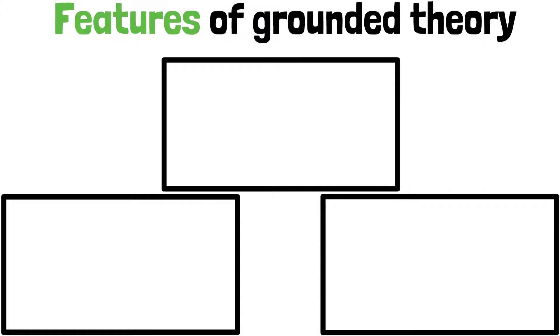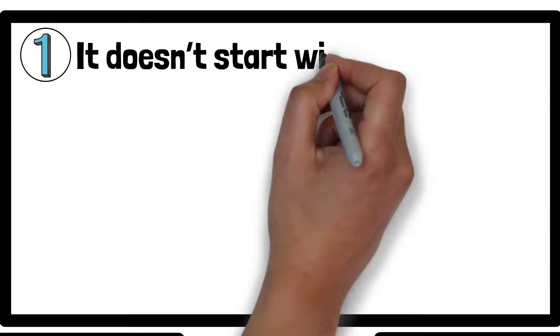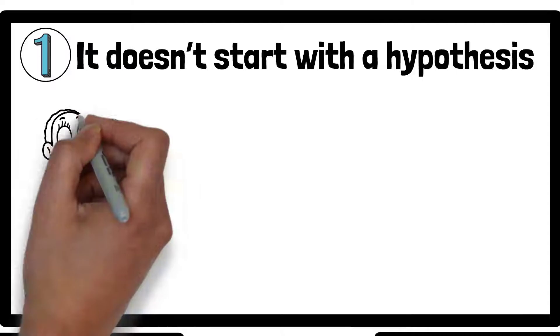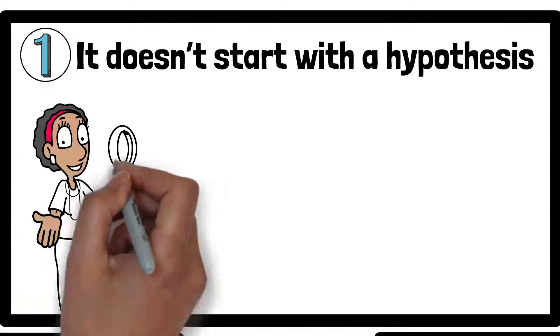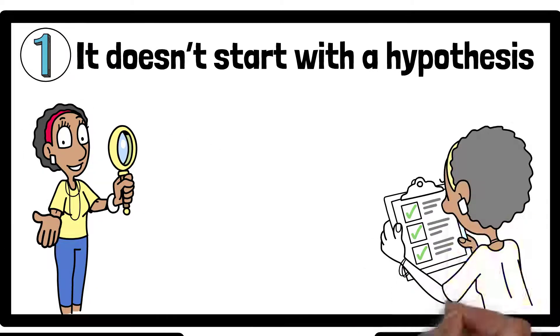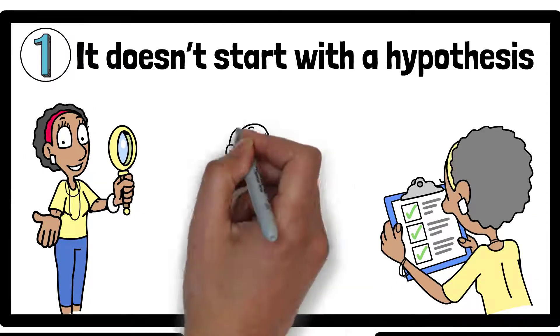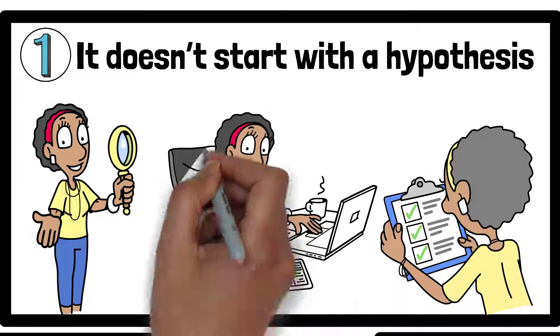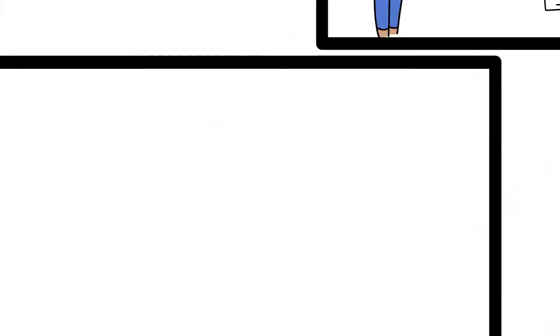There are three key features of grounded theory. The first key feature is that it doesn't start with a hypothesis. Researchers go into the study with an open mind and let the data guide them, which helps avoid any preconceived ideas or biases influencing the study.